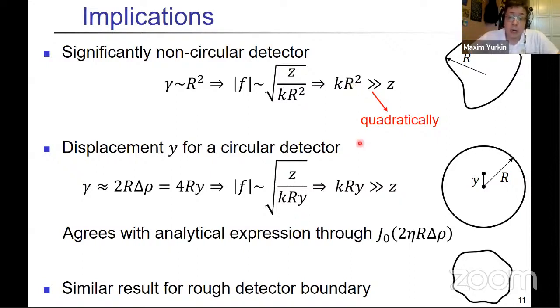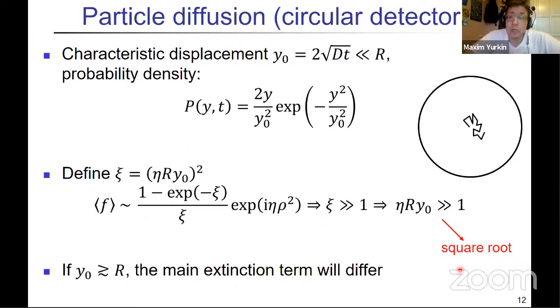You can apply it to, for example, a circular detector but the particle is displaced from the center. Here gamma is smaller—it's not R squared but R times this potentially small parameter y_0. Then you have this equation, and actually for this you can get an analytical expression, but it will give you the same order of magnitude as shown here. You can also get similar results for rough detector boundary.